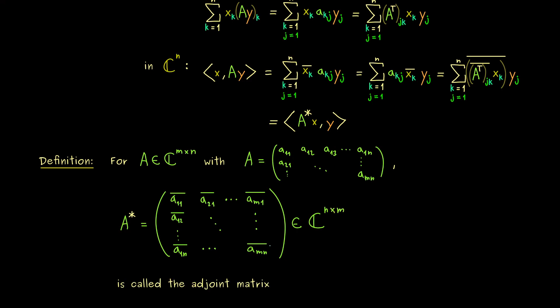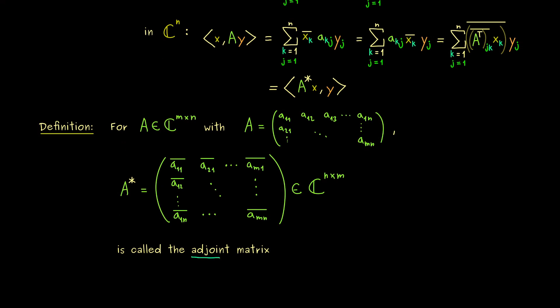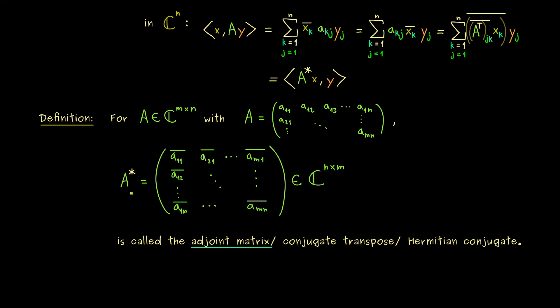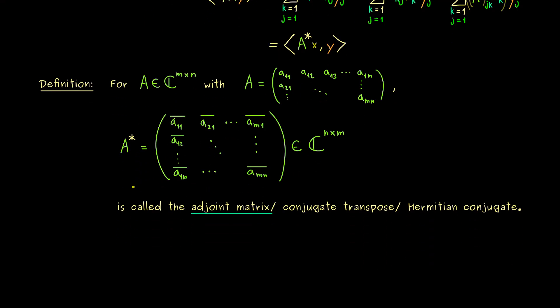And I already told you, the new matrix here we call the adjoint matrix of A. But don't forget there are also other names around, for example conjugate transpose or a Hermitian conjugate. And because of the last name, you sometimes also see a capital H instead of a star in the notation.